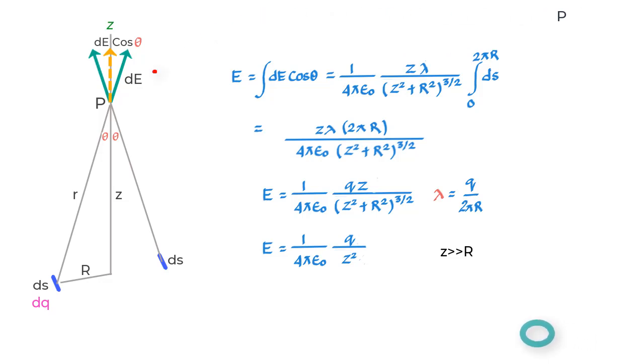We could also try to find what happens to E value if Z is 0. Instead of a very large Z value, we have just taken Z as 0. When you put Z equals 0, what we see is that E becomes 0.